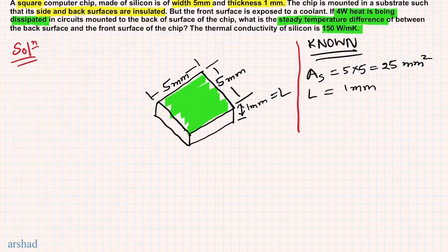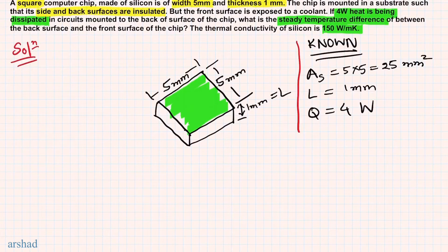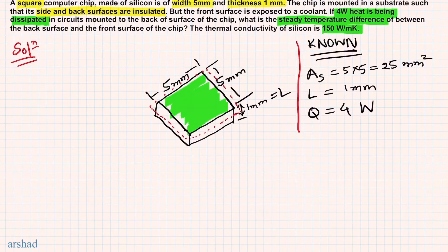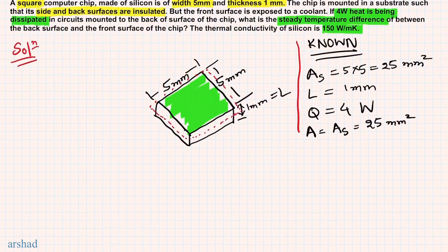We are also given the amount of heat Q, which is 4 watts. Note that the units are not consistent — some are in SI units and some, such as millimeters, are not in standard SI units, so we will take that into account later. For Fourier's law to be applicable, we need the cross-sectional area. Since it's a square chip, the surface area and the cross-sectional area are actually the same — both are 25 millimeters squared.